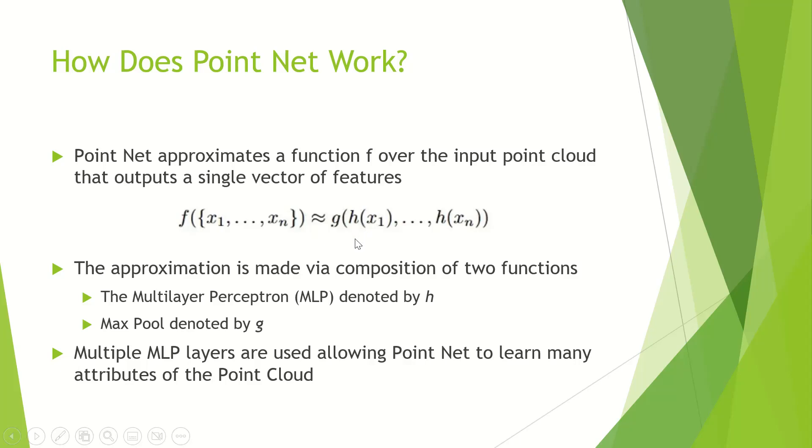The first is a multilayer perceptron, denoted by h. This h performs on every single point in our point cloud. Once we take the outputs of our multilayer perceptrons, we perform this other function g on it. This function g is the max pooling function. It should also be noted that this multilayer perceptron function h is actually the composition of many multilayer perceptron functions. What this means is we have many MLP layers that PointNet uses, and this allows PointNet to learn many different attributes of the point cloud.